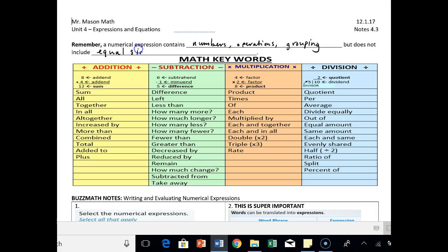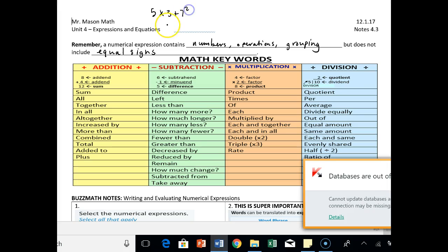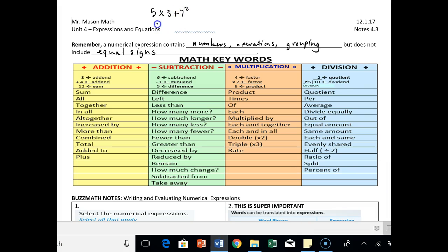So something like 5 times 3 plus 7 squared, that is an expression, a numerical expression, but something like 5 plus 3 equals 8 is not. It's got that equal sign. We call this an equation, something equal to something.